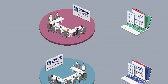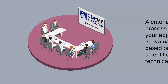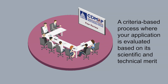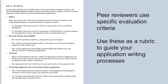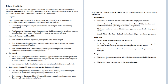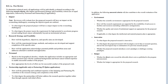The first tier of the review process is peer review. This is a criteria-based process where your application is individually evaluated based on its scientific and technical merit relative to an ideal application. Peer reviewers use specific evaluation criteria described in each funding opportunity, and applicants can use these criteria as a rubric to guide their application writing. It's important to note that funding opportunities describe both scored and unscored criteria. Although the unscored criteria do not receive individual criterion scores, peer reviewers do factor those criteria into the overall scores.